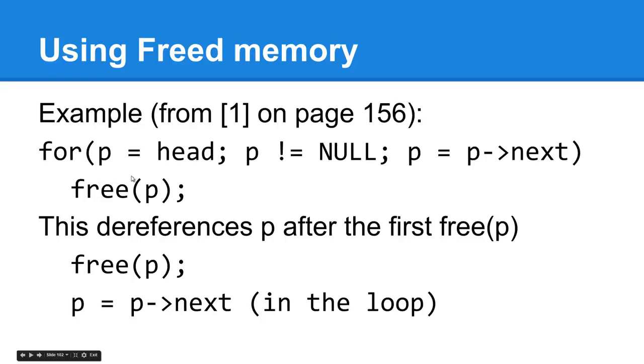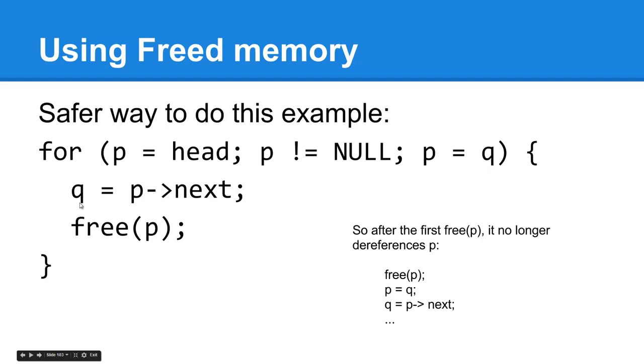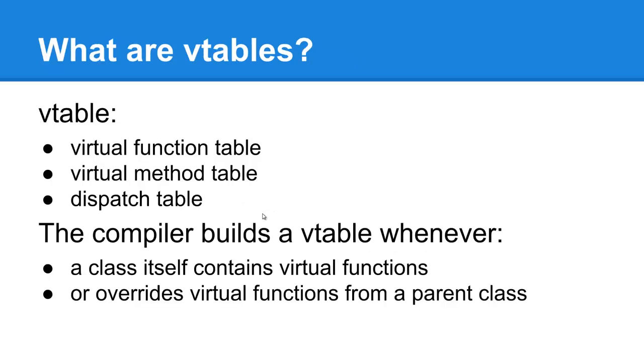If this is a multi-threaded application and multiple threads are sharing p, this would be perhaps a problem. The safe way to do this is to use a temporary variable and go about it this way. Instead of setting p equals to p sub next, use a temporary variable q. It's rather self-explanatory.